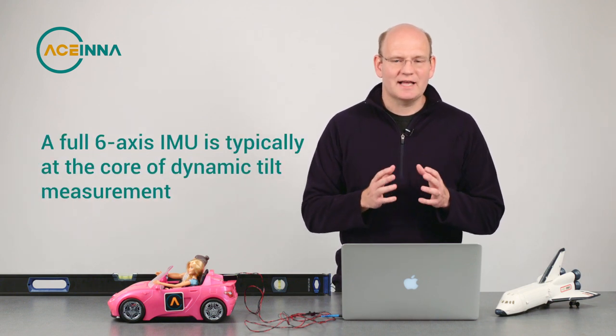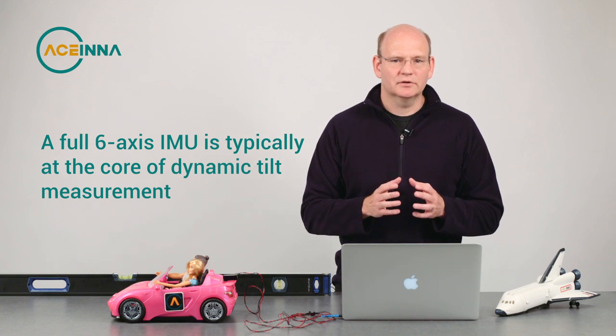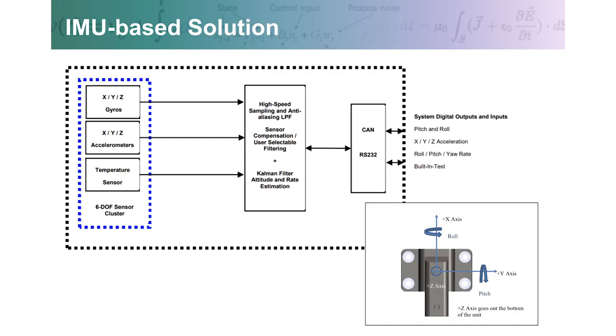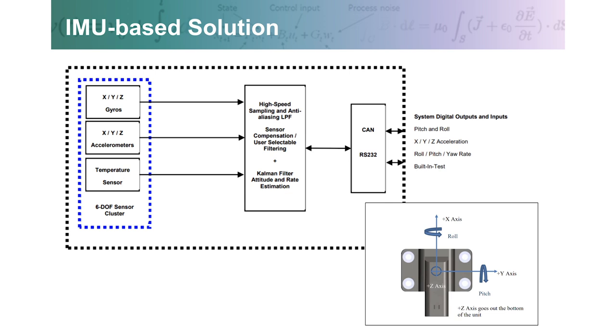And that is why a full six-axis IMU is typically at the core of dynamic tilt or attitude measurement. Here's a block diagram of what a typical IMU-based solution looks like hardware-wise. And this is how Asena's OpenIMU is also configured.